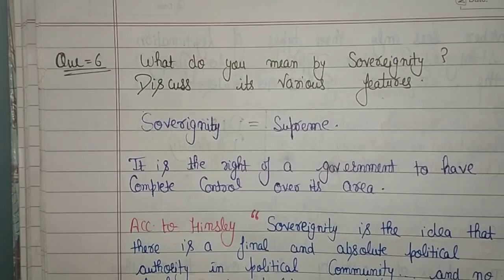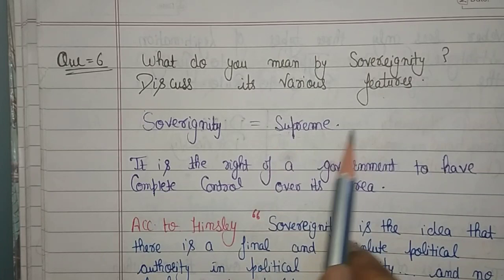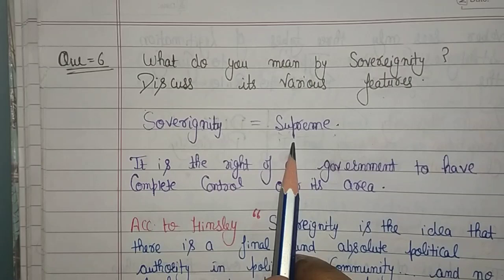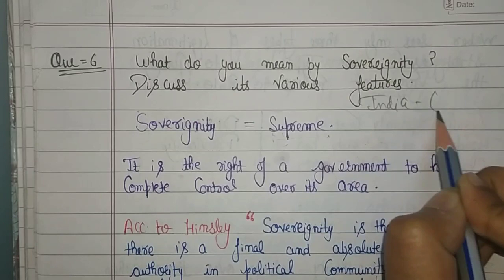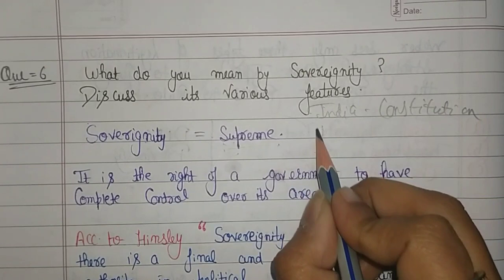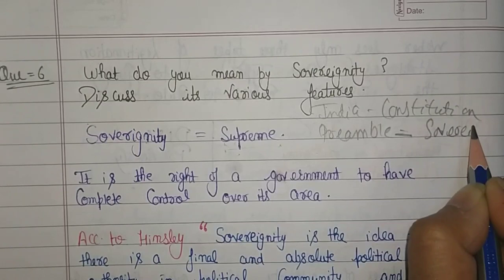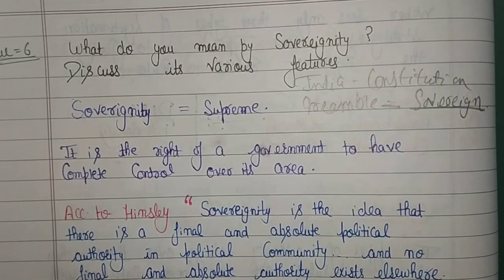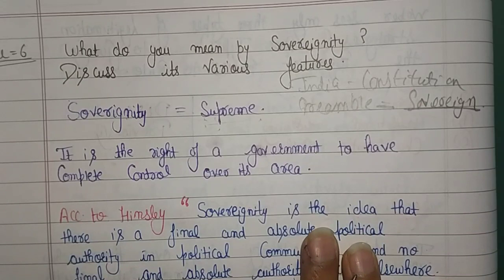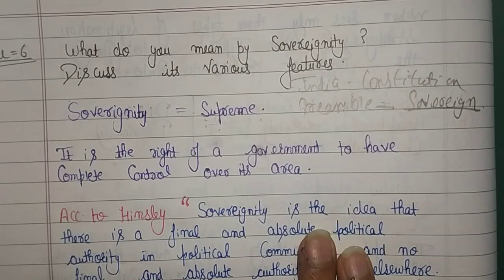Sovereignty. If we look at the basic meaning, if we describe the word, it means supreme or superior. You know that in the Indian Constitution — in the Preamble — the terms mentioned are: Sovereign, Socialist, Secular, Democratic Republic. So 'sovereign' is one important basic word. What does it mean simply? To make a decision — they will take the decision on your behalf.